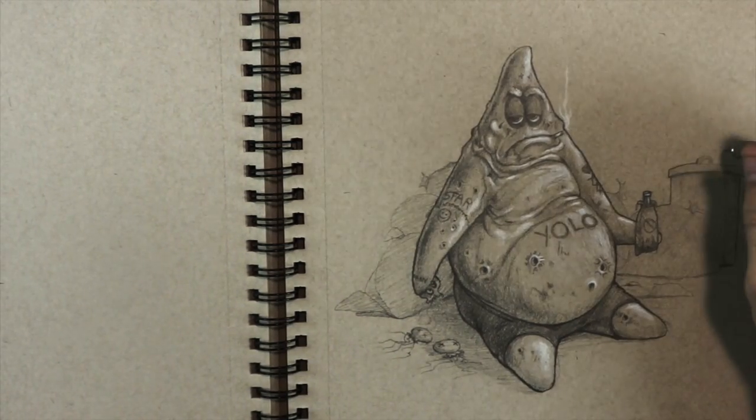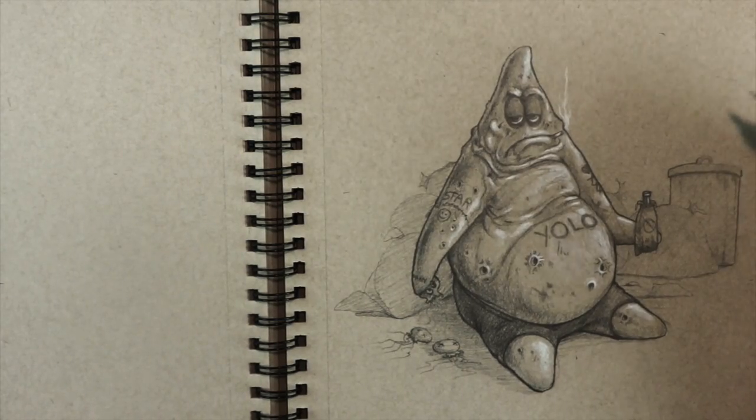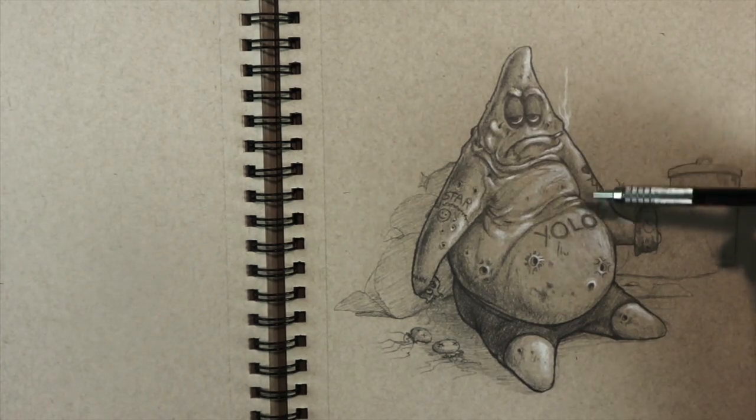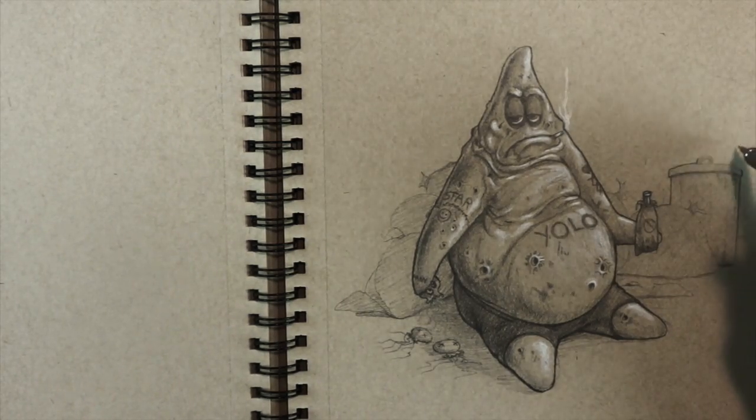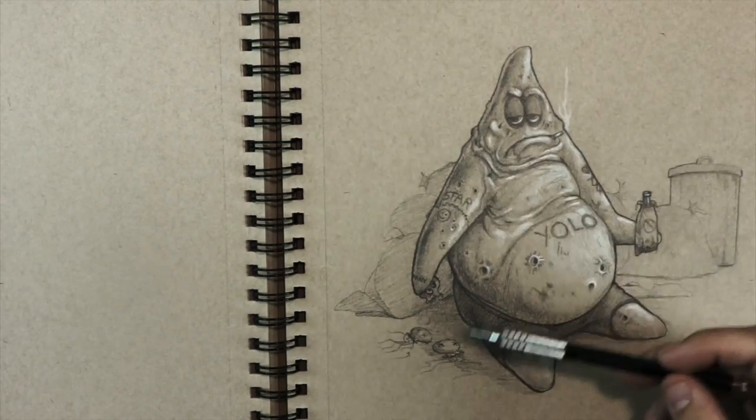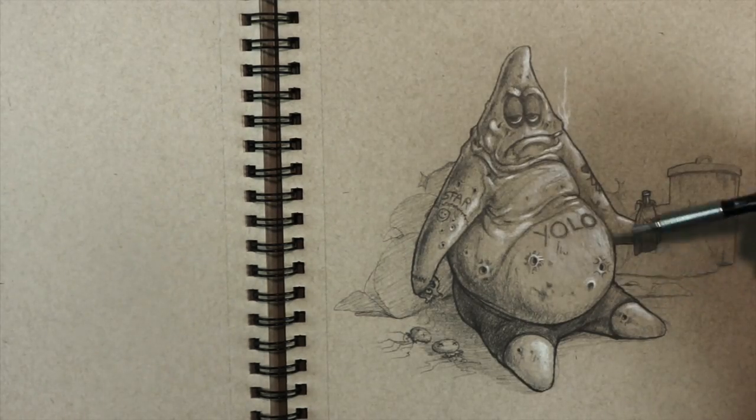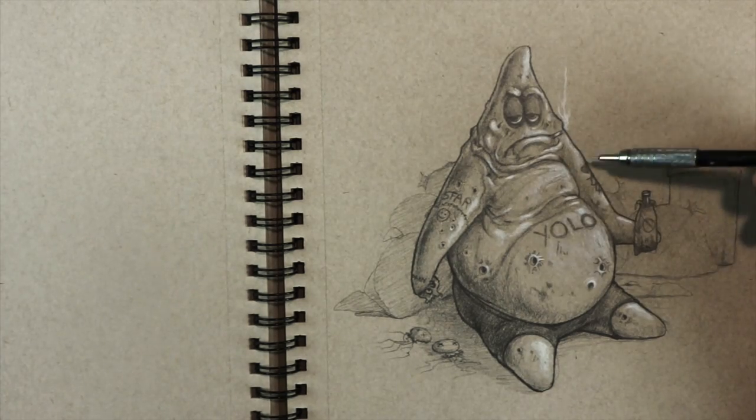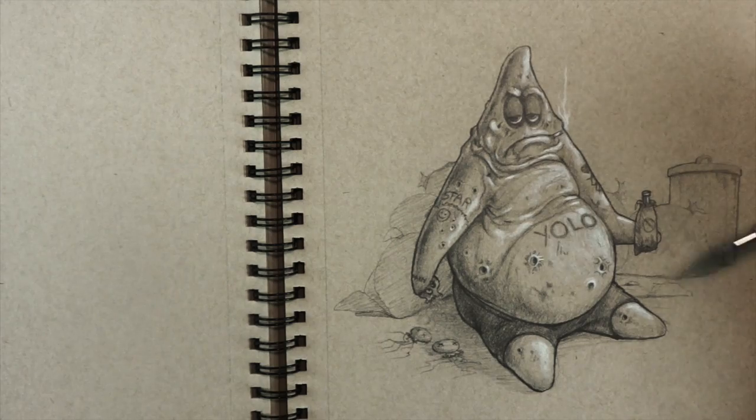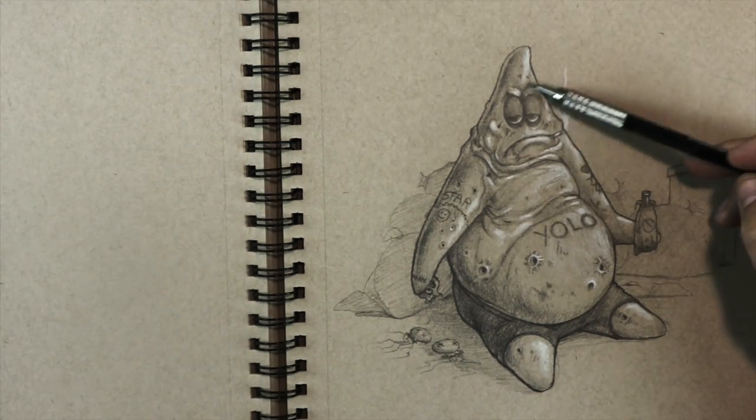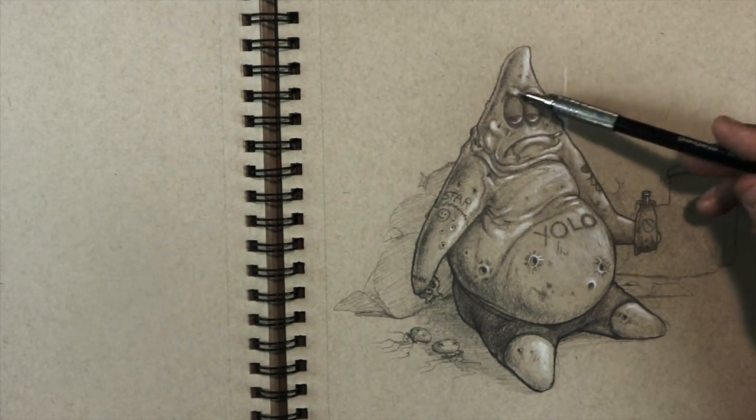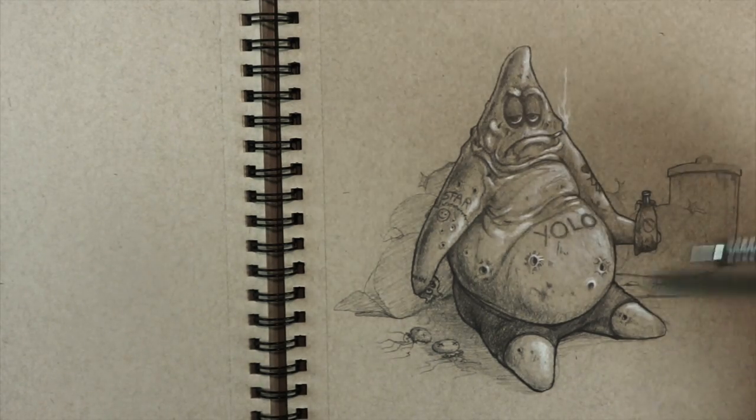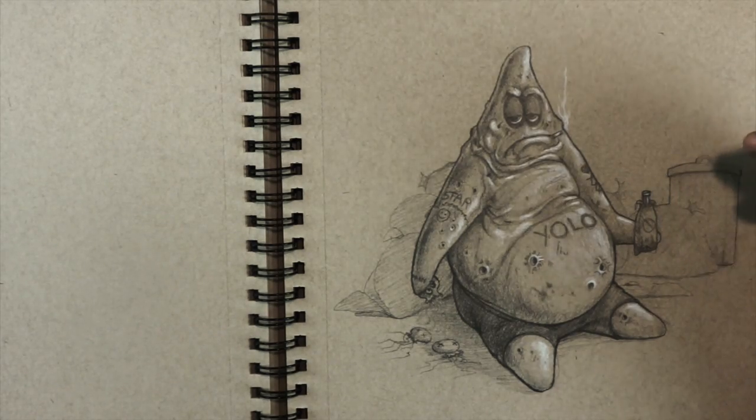I had this little storyline that Spongebob fell in with the wrong crowd and a few years down the road. So I felt like I needed to do Patrick at 40 years old. He's been getting high on jellyfish, letting them sting him and stuff like that. He's got some tats, definitely let himself go. This was a fun drawing, I really like the way it turned out. I feel like it's got a lot of personality. Just looking at his face, that's one of those things where when you have a drawing that really just comes to life and has a lot of character.